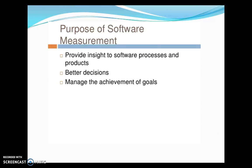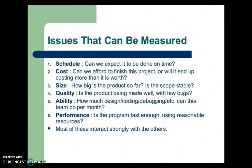The purpose of software measurement is to provide insight into software processes and products, support better decisions, and manage the achievement of goals. There are six types of issues that can be measured: schedule, cost, size, quality, ability, and performance.